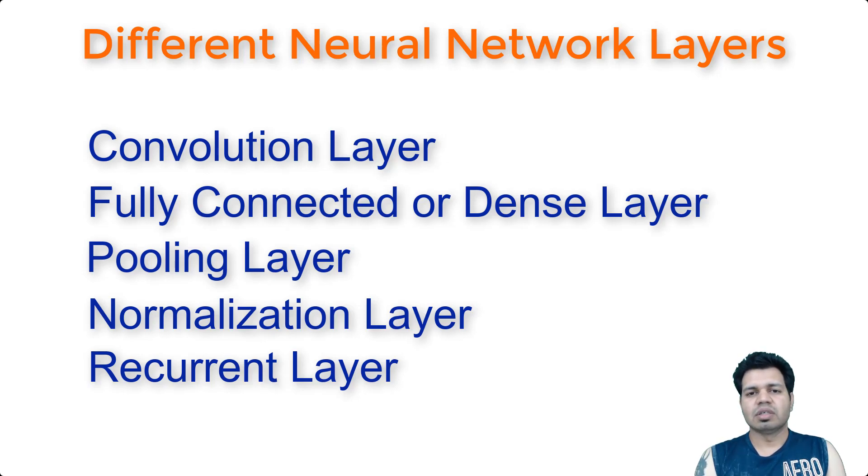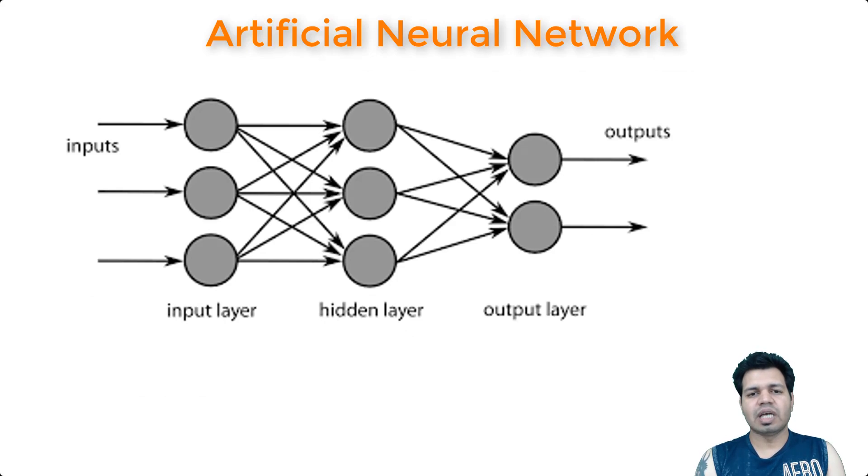In the first layer or input layer, we have three neurons or nodes here. Each of these nodes represents individual features from each sample within our dataset. We can see that each of these nodes are connected with each individual node in the hidden layer. Each of the input layer nodes is associated with other individual nodes in the hidden layer.